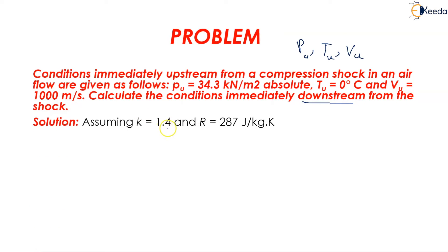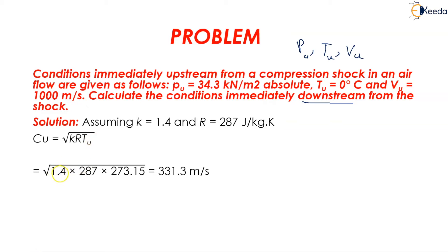Assuming K is equal to 1.4 and the gas constant R is equal to 287 joule per kg Kelvin. We know Cu is equal to the square root of K times R times Tu. Substituting all values: square root of 1.4 multiplied by 287 multiplied by 273.15, which equals 331.3 meters per second. So the Mach number upstream is equal to 1000 divided by 331.3, which equals 3.02.